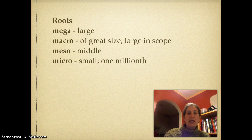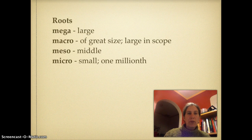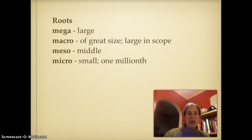Mega means large. Macro means of great size, large in scope — we've talked about that before with macronutrients, the NPK that plants need in larger quantities. Meso means middle, and you've learned about Mesopotamia in your language arts class. And micro means small, or in particular, one millionth — of course, you've heard about microscopes before.